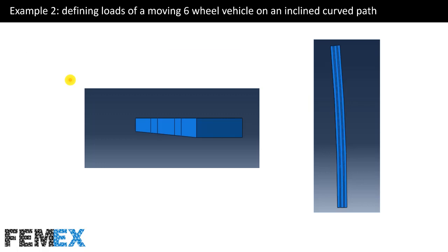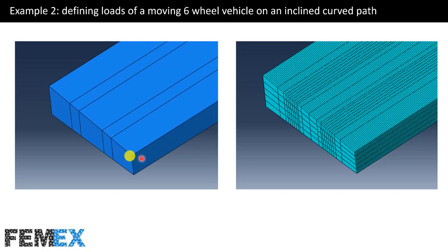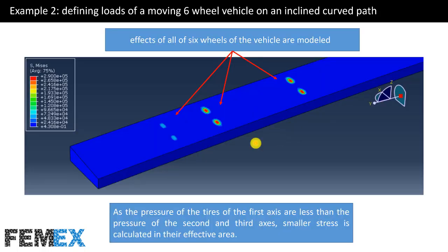In Example 2, I define the loads of a moving six-wheel vehicle on an inclined curved path. You can see the curvature of the path and its slope. I have defined four partitions to control element size and pattern. I used the dynamic implicit step and the DLOAD subroutine to solve this example. You can see the effect of each wheel — we have six wheels and six regions. The vehicle has three axles. As the tire pressure of the first axle is less than that of the second and third axles, a smaller stress is calculated in their effective areas.